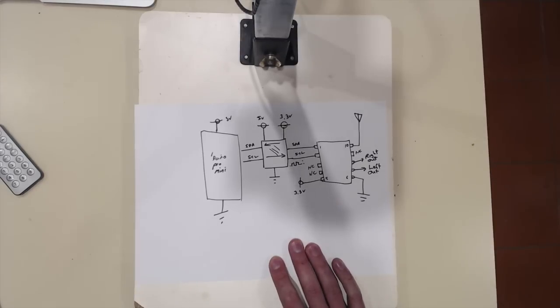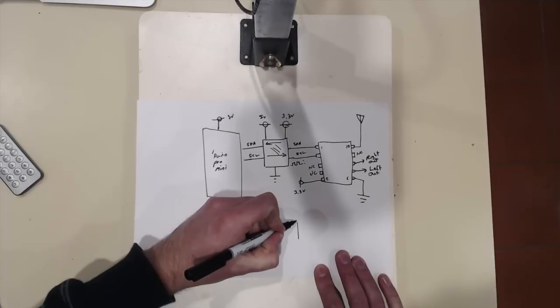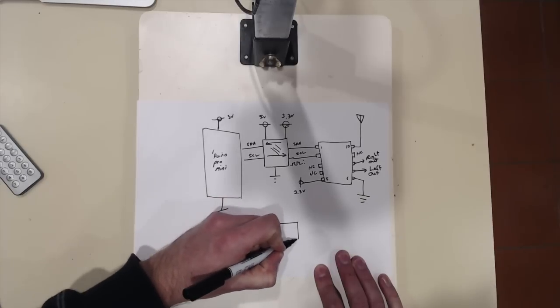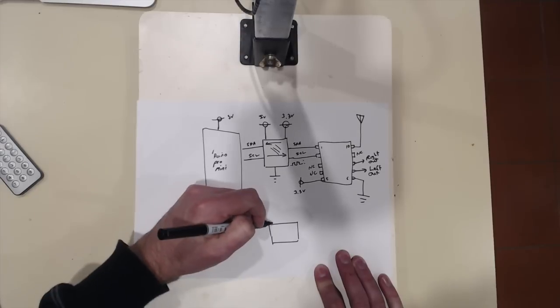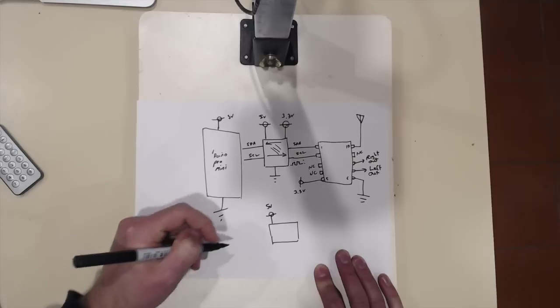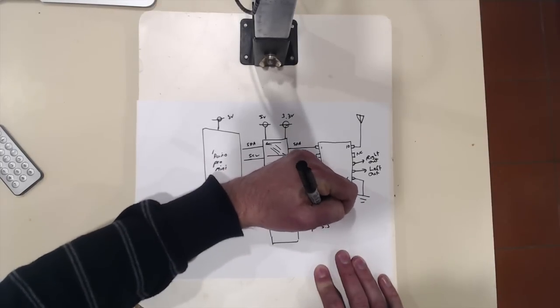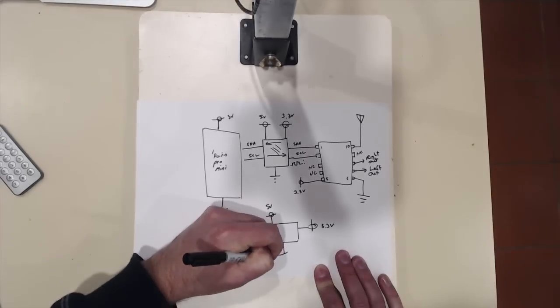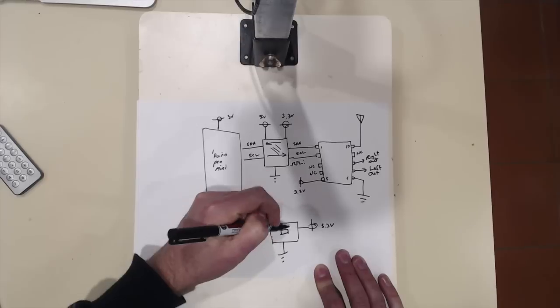And, there really isn't much else to that. The only other thing that's on the breadboard here is a little 3.3 volt regulator module. So, that takes the 5 volts in and will produce the 3.3 volts out.